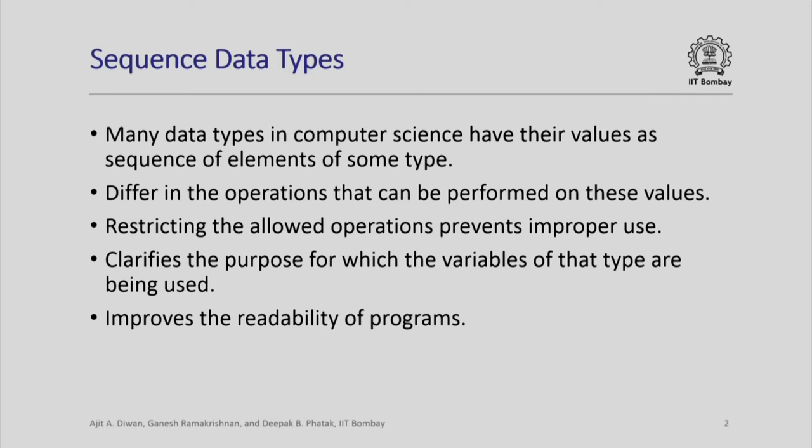Restricting the allowed operations prevents us from using those values in an improper way — you are only allowed to do certain things to that sequence. Anyone reading your program would also understand what you are going to do, because once you declare that your variable is of that type, it defines what operations are going to be performed on it. Although the values of these data types are all sequences, the operations performed are different, and therefore they are considered to be different abstract data types.